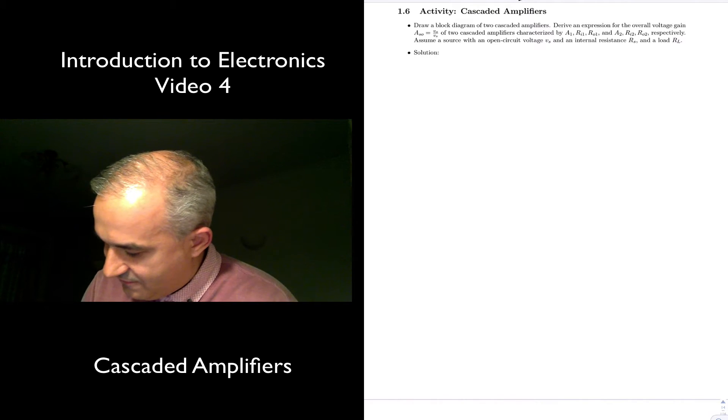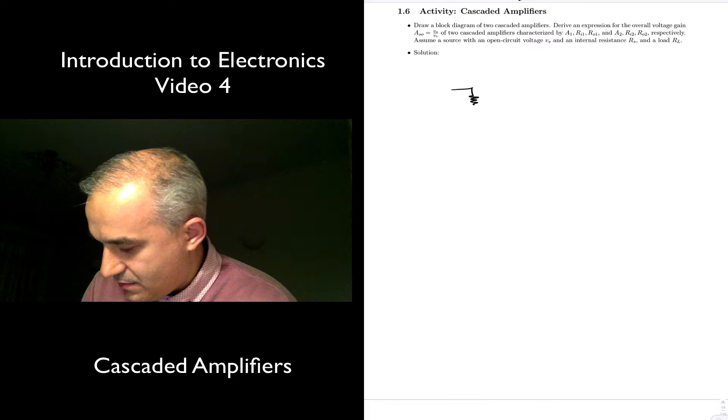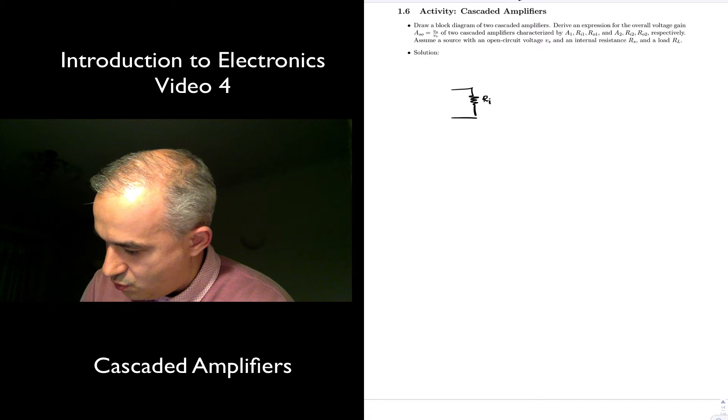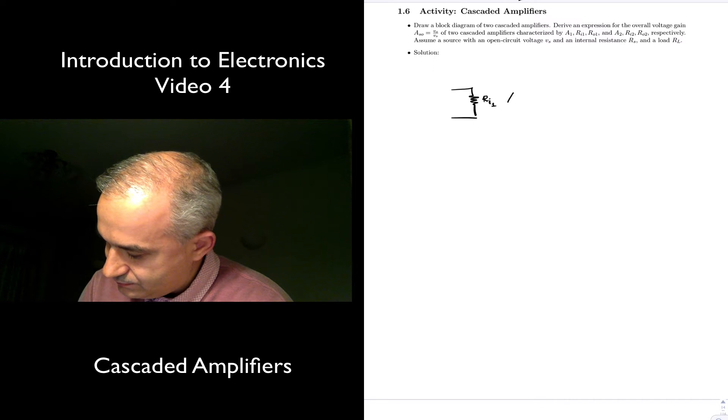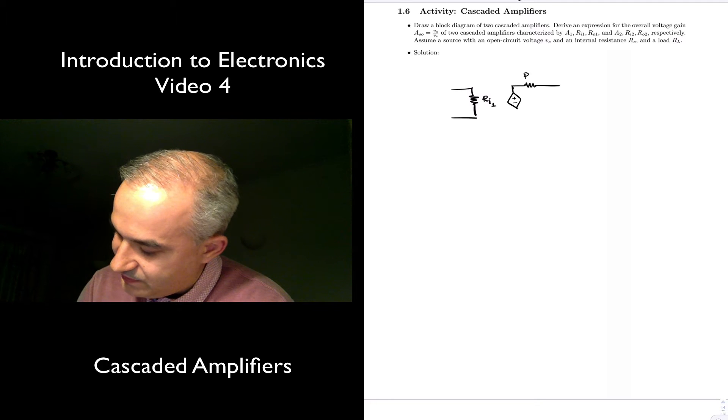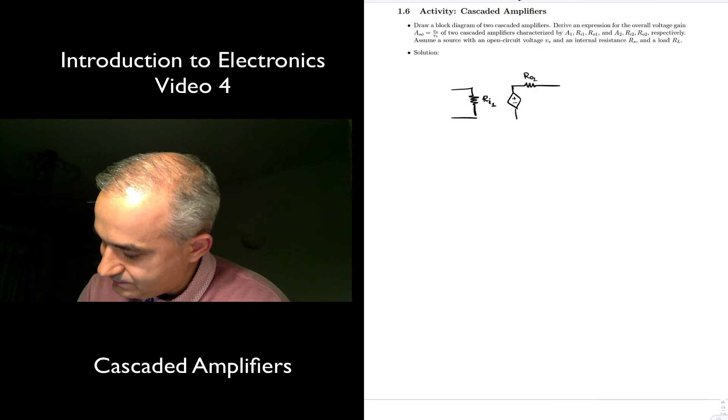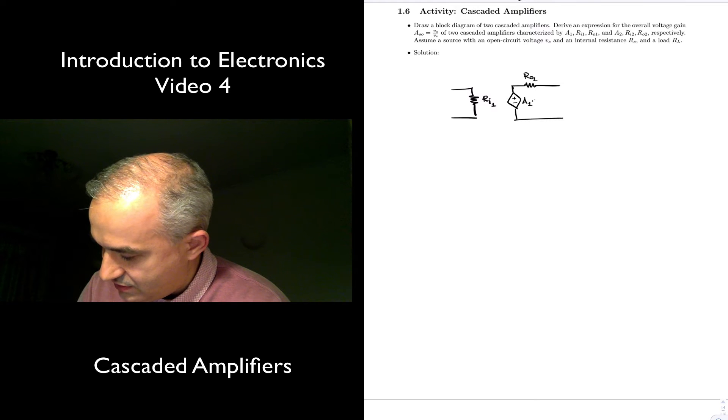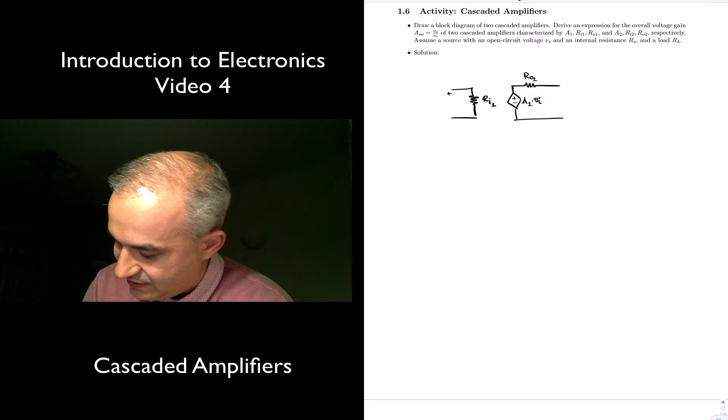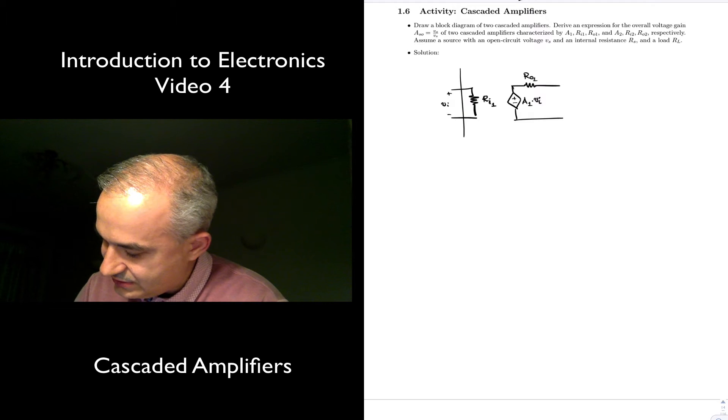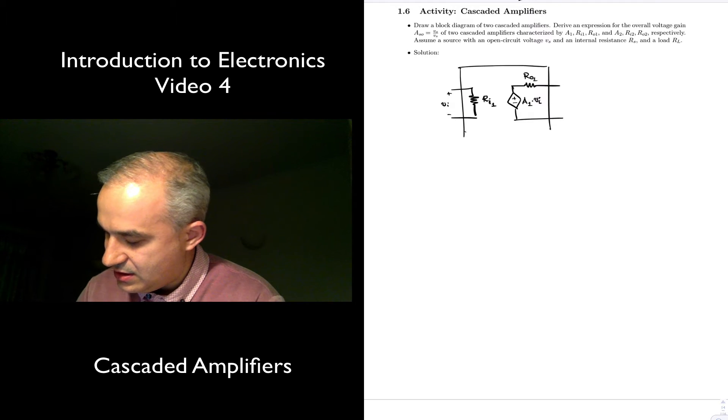Let's draw a first amplifier with an input impedance Ri1. We have a voltage-controlled voltage source to model the amplification, an output impedance Ro1, A1 as a function of the input voltage. This is our input voltage. So this is our first amplifier.